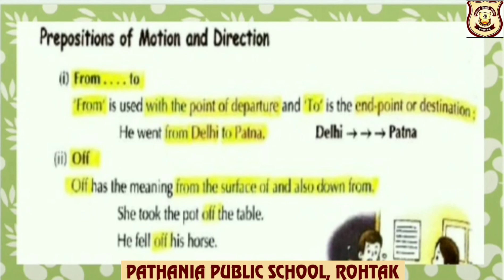Prepositions of motion and direction. From and to — from is used with the point of departure, and to is the end point or destination. For example: He went from Delhi to Patna. You can see, children, preposition 'from' — point of departure — place mentioned is Delhi. And another preposition 'to' is used to mention the end point, that is, Patna.